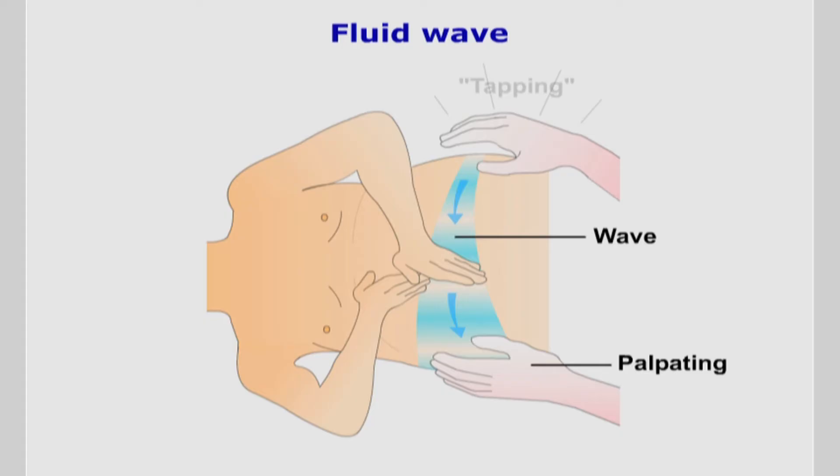In a normal person, to prevent transmission through the fat tissue, the hands are placed across their abdomen. You should be aware that this test is positive only when there is a significant amount of fluid present and you may also get a false positive.